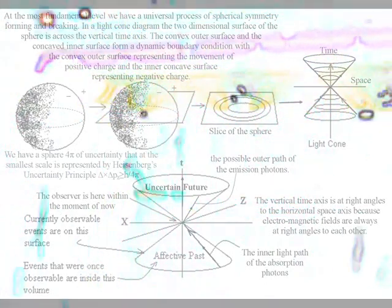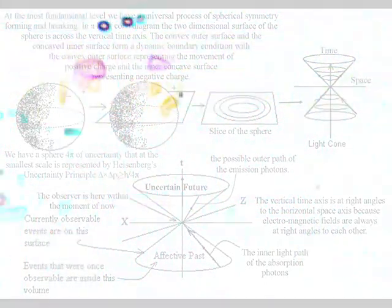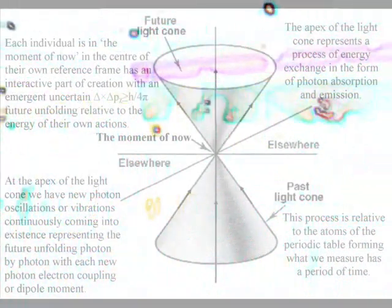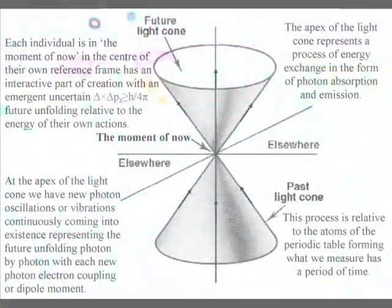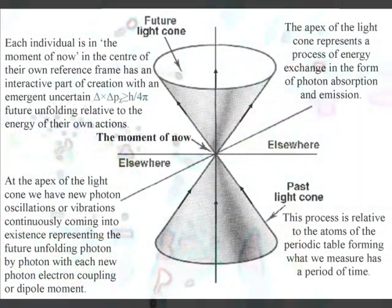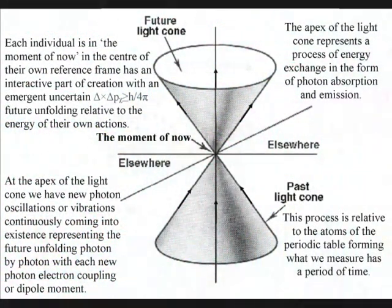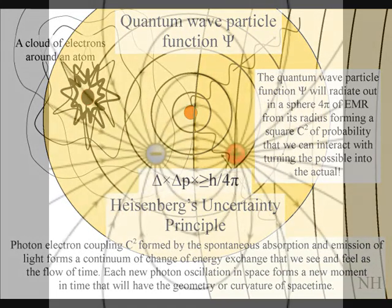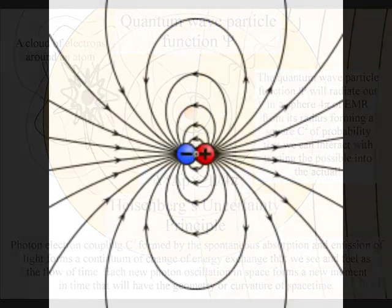Because the universe is never at absolute zero, this is a continuous and universal process. If our eyes were more sensitive to the different wavelengths of light, we would be able to see that everything is continuously radiating light. At the apex of the light cone we have new photon oscillations or vibrations continuously coming into existence, representing the future unfolding photon by photon with each new photon electron coupling or dipole moment.